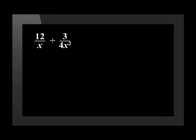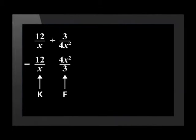We have 12 over x divided by 3 over 4x squared. We keep 12 over x the same, but flip 3 over 4x squared to 4x squared over 3. The divide sign is changed to multiply. Once we've changed the division of fractions to a multiplication of fractions, we can apply the rules for multiplying fractions. We multiply the numerators by the numerators and the denominators by the denominators — top by top and bottom by bottom. But we can make the calculation easier if we cancel, factorise, and simplify the fractions before multiplying.